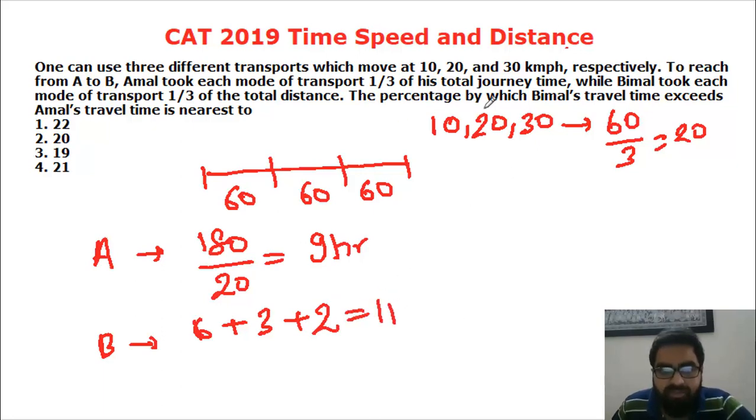The question is the percentage by which Bimbal's travel time exceeds Amal's travel time. If you see that is 2 by 9. 1 by 9 is 11.11 percentage so 2 by 9 is 22.22 percentage.